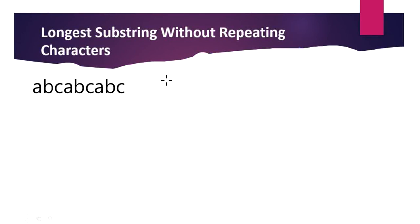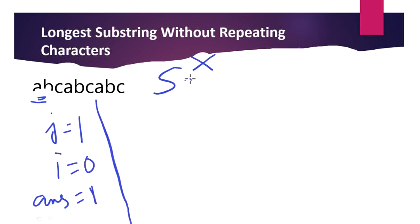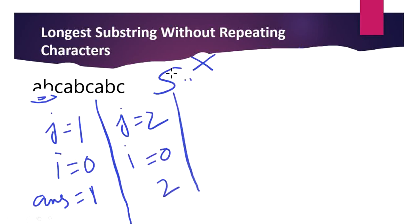Let's iterate through the string. The first character is 'a'. The loop checks whether 'a' is already present in the set — it is not, so j increments to one, i stays zero, and the answer is one. For 'b', it's not in the set, so j equals two, i is zero, and answer is two. For 'c', j equals three, i is zero, and answer is three.